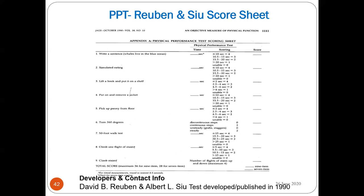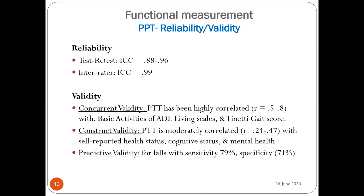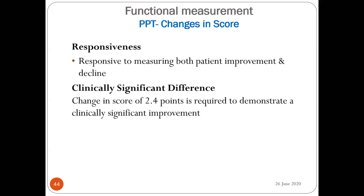PPT reliability: ICC for test-retest is 0.88 to 0.96, and inter-rater ICC is 0.99. Validity: concurrent validity shows high correlation (r = 0.5 to 0.8) with basic ADL scale; construct validity shows moderate correlation (r = 0.24 to 0.47) with health status and mental health. Predictive validity for falls: sensitivity 75%, specificity 71%. Responsiveness measures both patient improvement and decline. A change of 2.4 points demonstrates a clinically significant improvement.